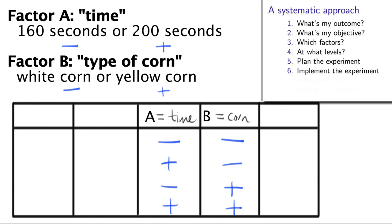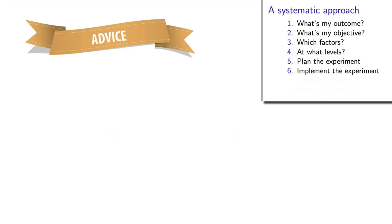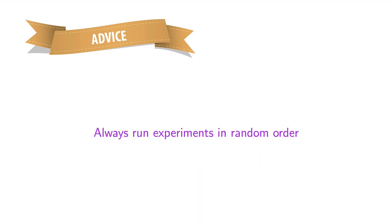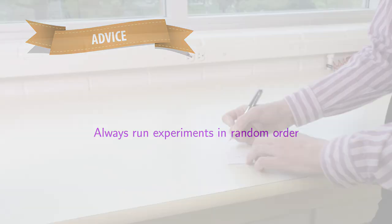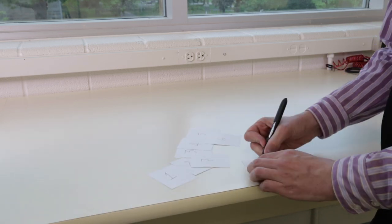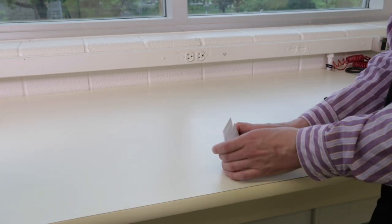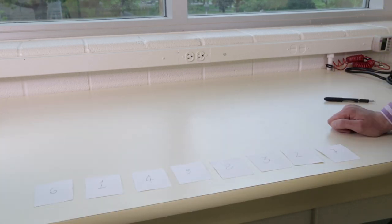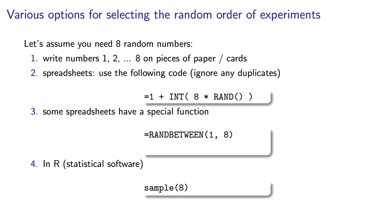Now we are ready to implement the experiments. Now here's a bit of advice, and in this course, when we give some practical advice, we will show it with this icon. The most important thing that you should not do is run the experiments in the order shown in this table. You must run the experiments in random order. Now you can choose any method you like to pick that random order of experiments. The easiest, I find, is to write numbers on pieces of paper as many as you have experiments. Then randomly select these pieces of paper until no more are left. A few other options are shown here on the screen. Please take a look at them.